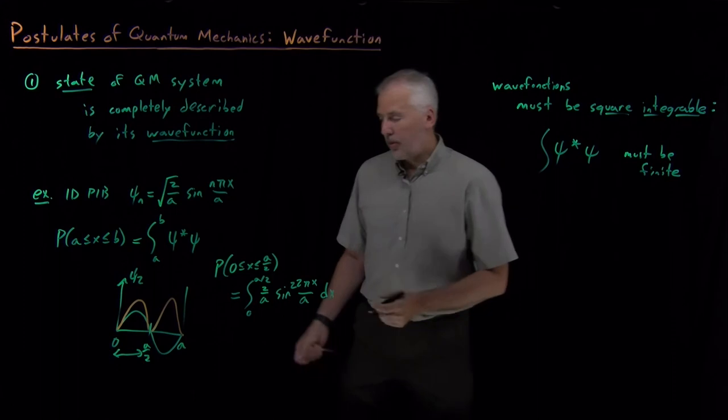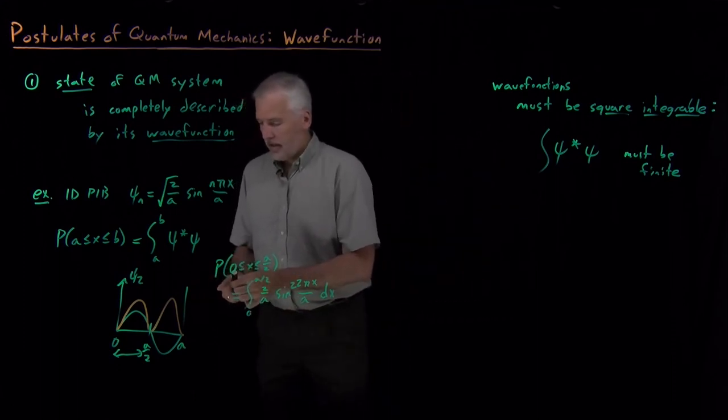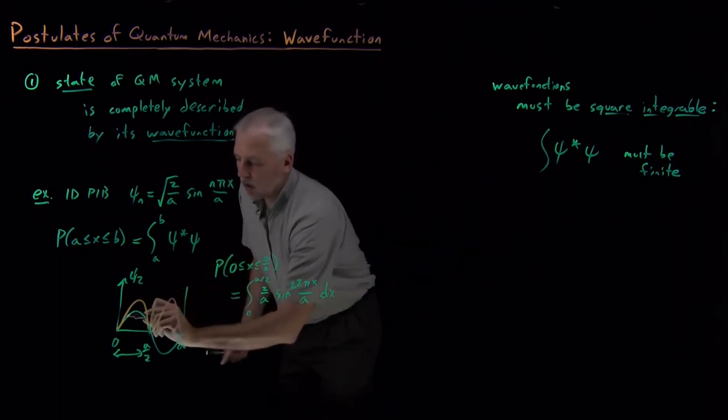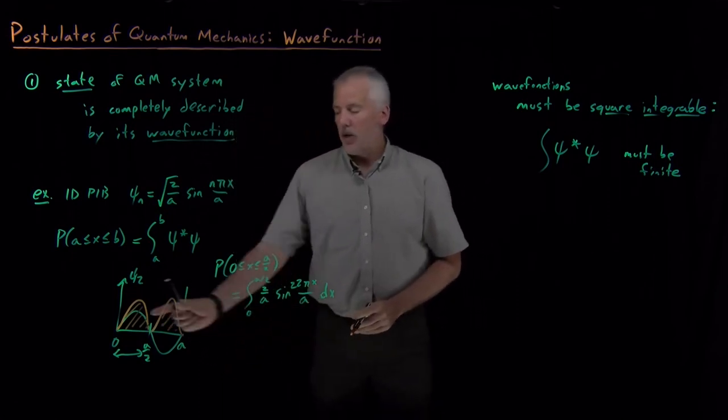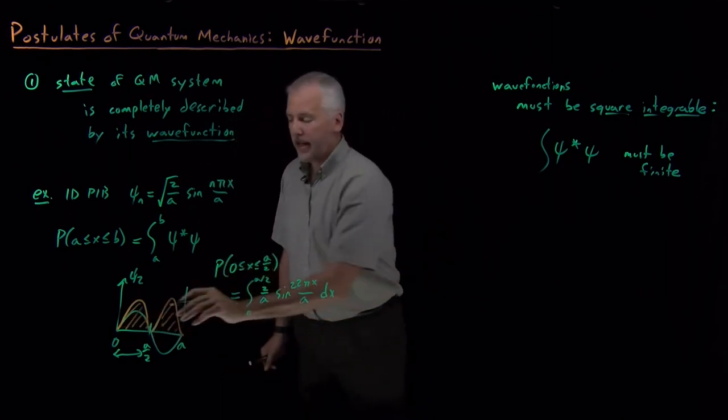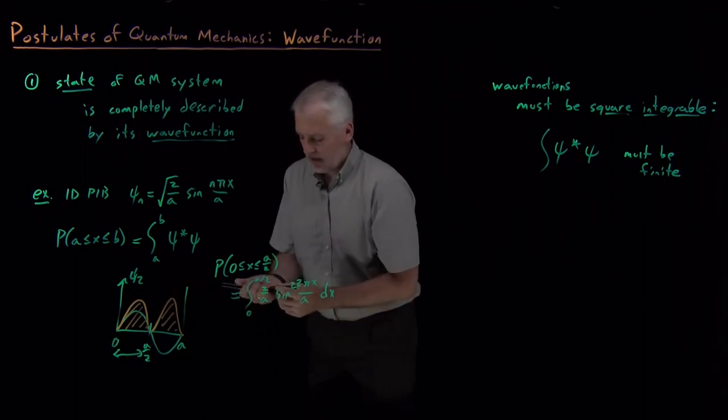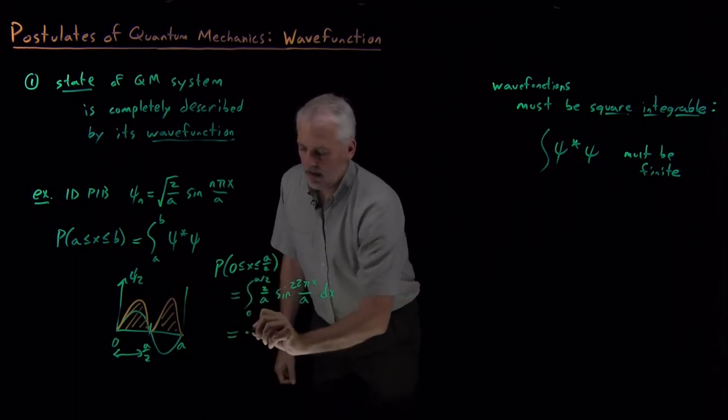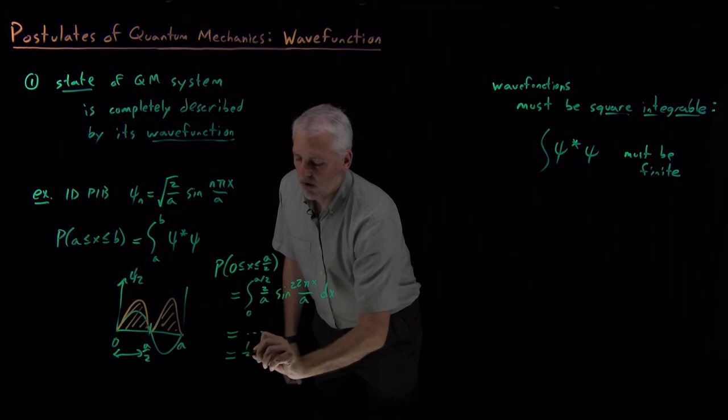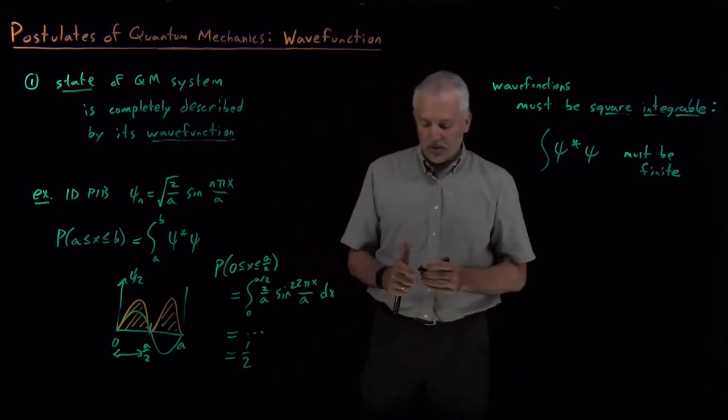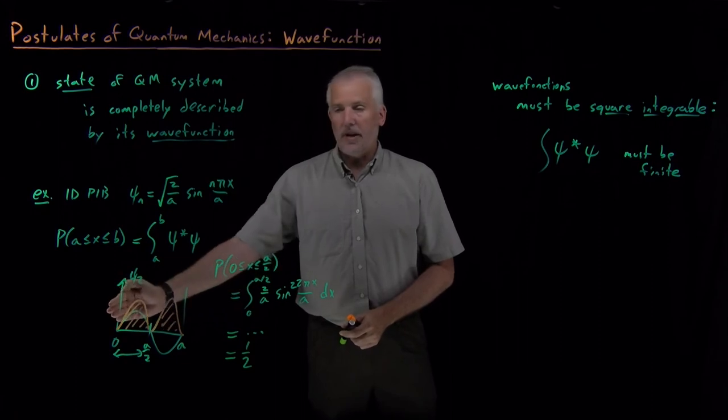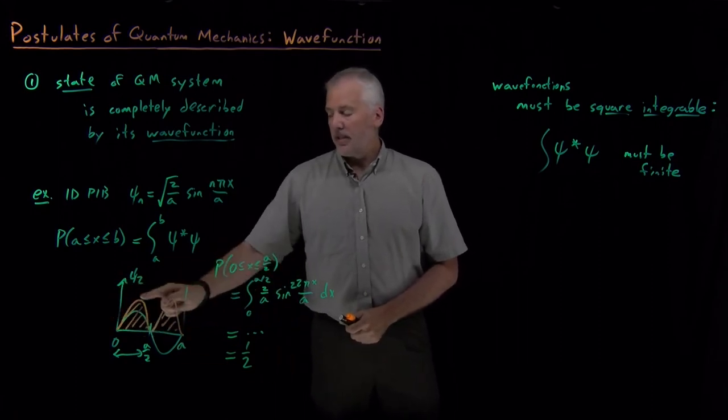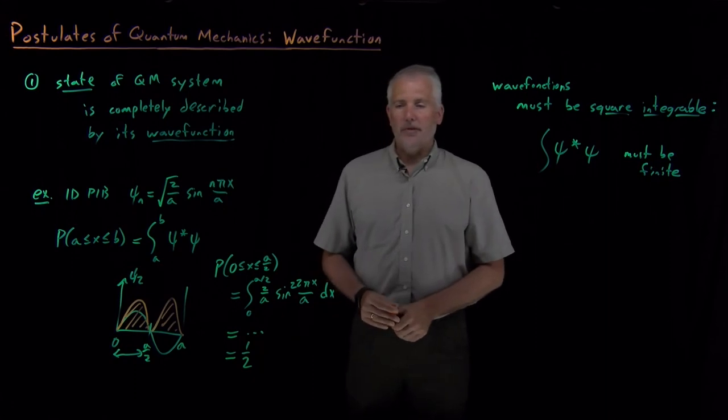or we could look at the graph and recognize that the whole area under this curve is one, because I've normalized my wave function, and the left half is symmetric with the right half. By symmetry, that integral equals one half. So there's a 50% probability that the electron is in the left half of the box. It exists at different positions with different probabilities given by the wave function.